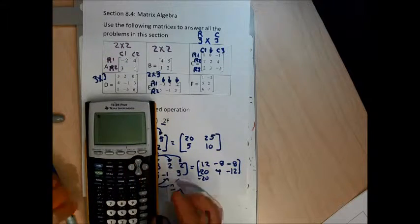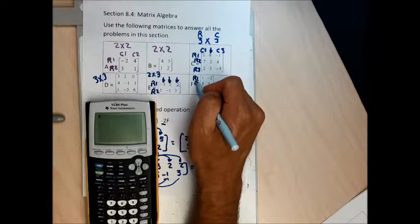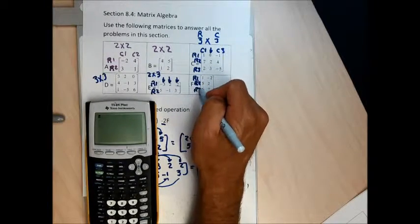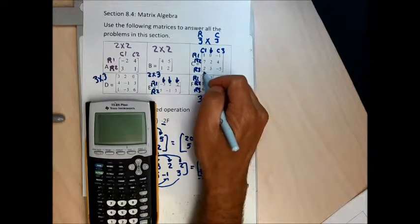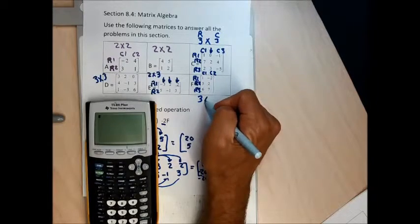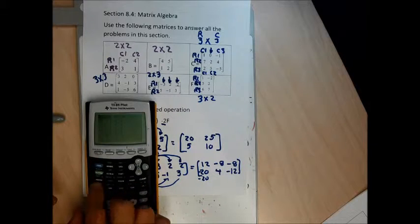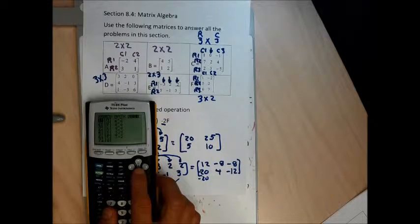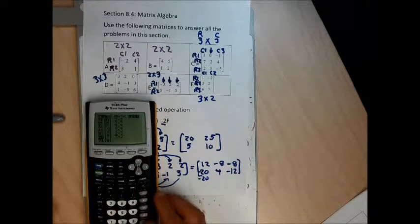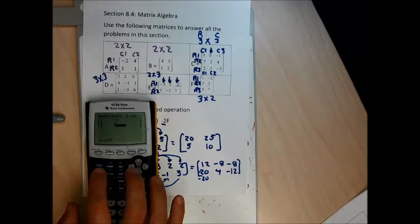The last matrix, F, has three rows and two columns — so it's a 3 by 2 matrix. To enter it: second and X-inverse, over to edit, down to letter F. It's a 3 by 2. I type 1, negative 2, 5, 2, 6, and 7. So I have all my matrices in. Second, quit.